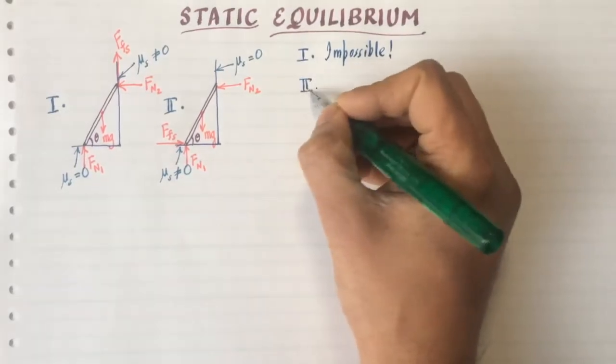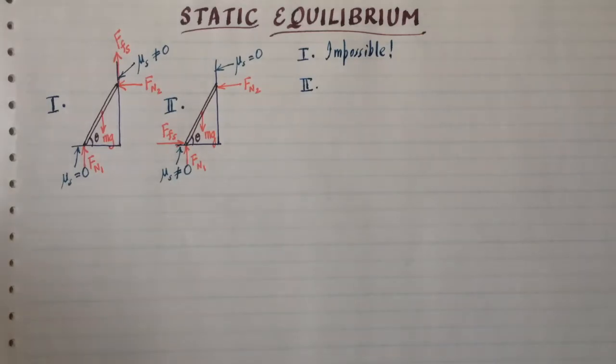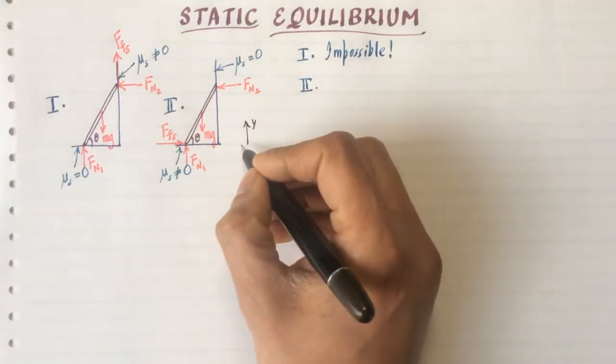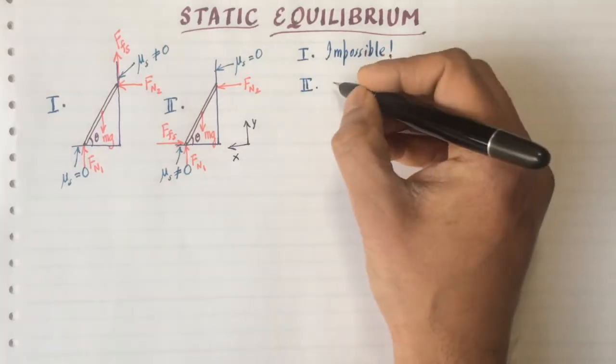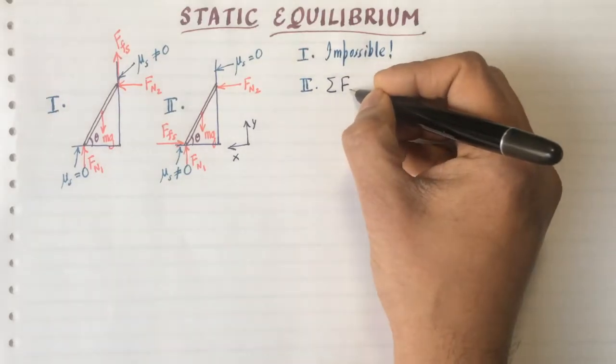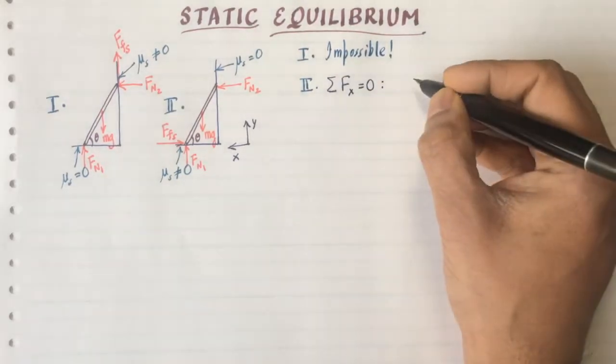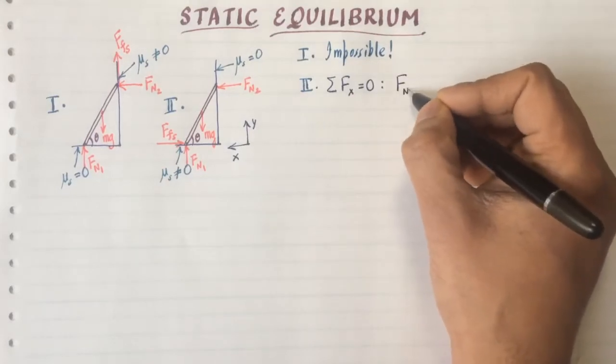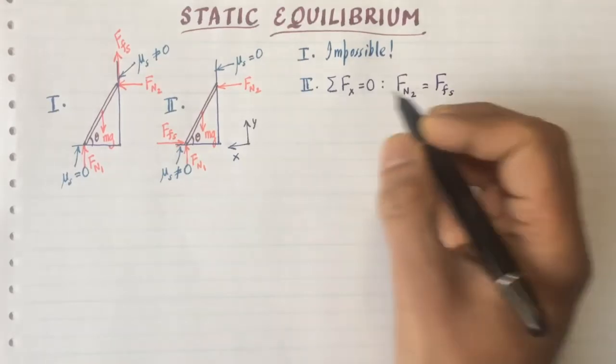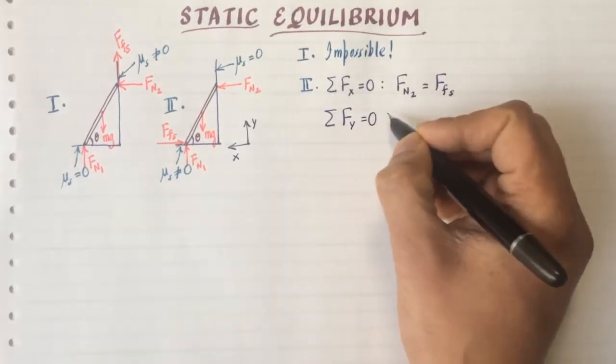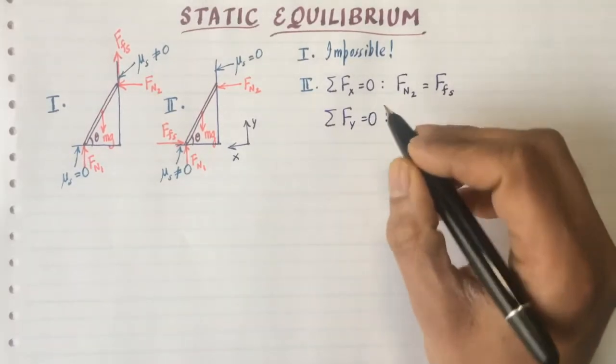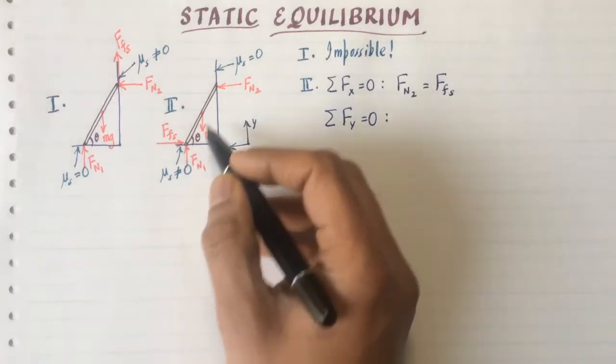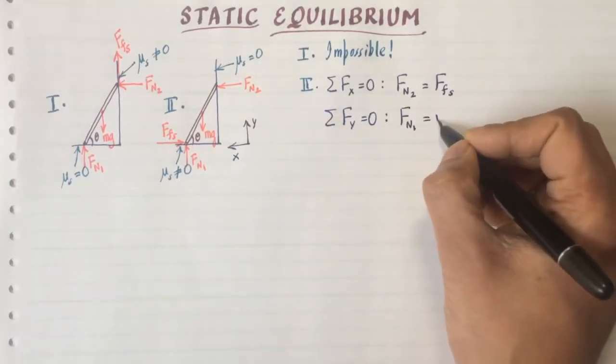So we are left just with the scenario two. Let's try to solve scenario two now. Because we know that that's the scenario that we're going to use. So first of all, if you call this the x direction and the y direction, we can write the sum of all the forces in the x direction and y direction. Let's do the x direction first, the sum of all the forces in the x direction equals zero. Well, that tells me that Fn2 must equal Ffs. Then I do the sum of all the forces in the y direction equals zero. You don't want the ladder accelerating either in the x direction or the y direction. That's what makes for a safe ladder. So I want Fn1 equal to mg.